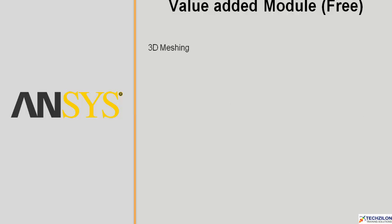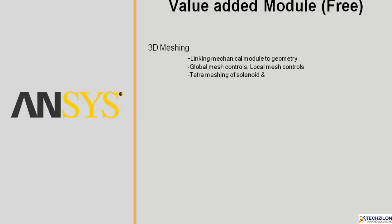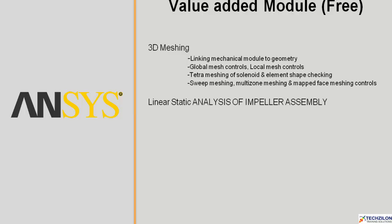You will then move on to 3D meshing, where you will learn linking the mechanical module to geometry, global mesh controls and local mesh controls, tetra meshing of a solenoid with element shape checking, sweep meshing, multi-zone meshing, and map face meshing controls. This also includes linear static analysis of an impeller assembly — applying loads and boundary conditions, using coordinate systems, running analysis, and post-processing.